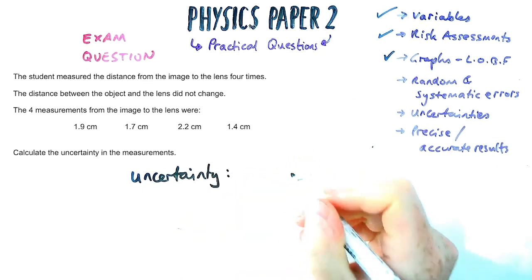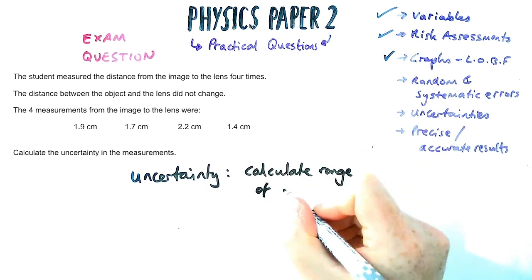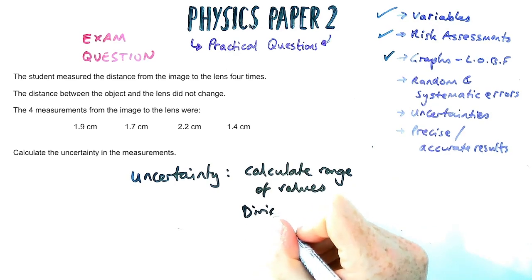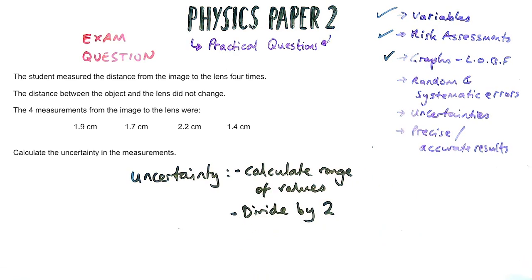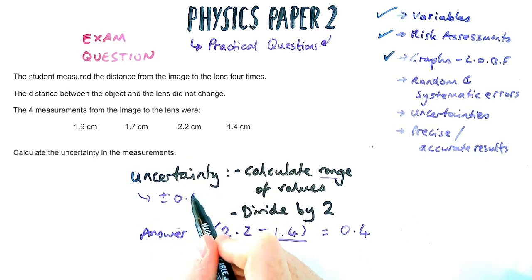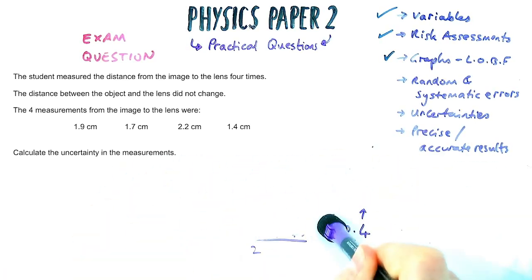Now, another thing that comes up relatively frequently is how to calculate uncertainty. The actual calculation itself is really easy, you just need to know how to do it. So what we do is we calculate a range of values, and then divide by two. So in this case up here, I've got 1.9, 1.7, 2.2, and 1.4. I find the range, so the highest minus the lowest, and then just divide by two. So that turns out to be 0.8 over 2, which is 0.4, two marks. And how you represent that is a little positive or negative sign before the 0.4 to show it could go up by 0.4 or down by 0.4.